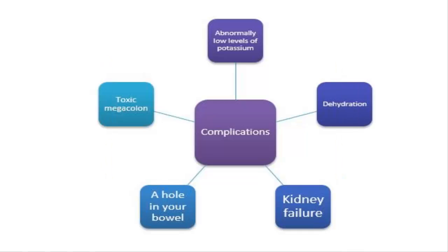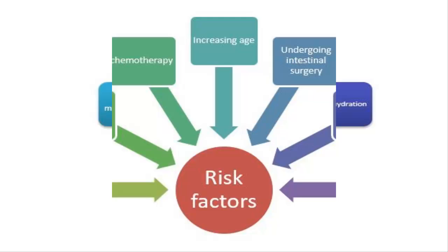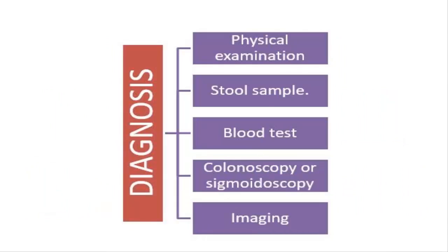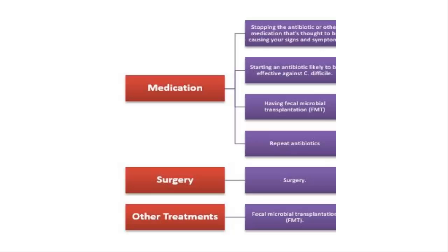Additional risk factors include having a weakened immune system, taking medications called proton pump inhibitors to reduce the amount of stomach acid, or having had surgery of the digestive system. Many C. difficile infections occur in places where many people take antibiotics and are in close contact with each other, such as hospitals and nursing homes.